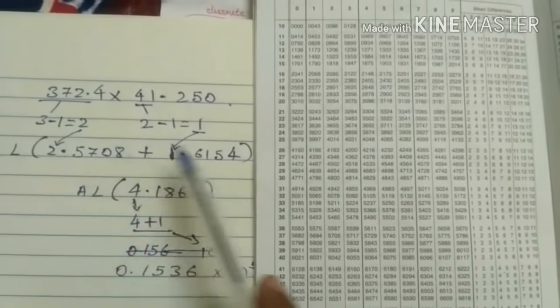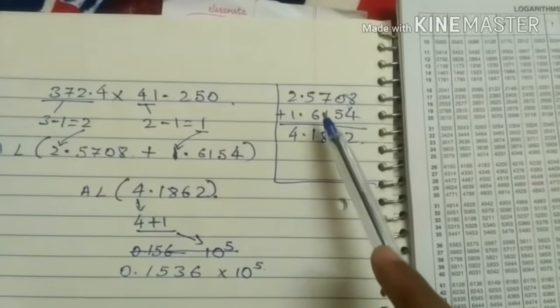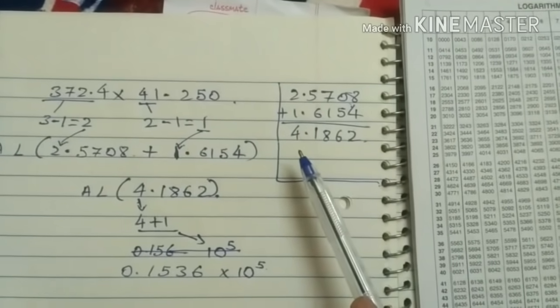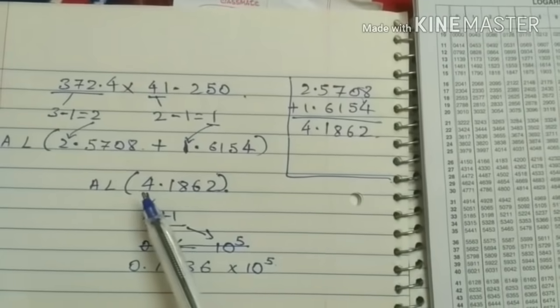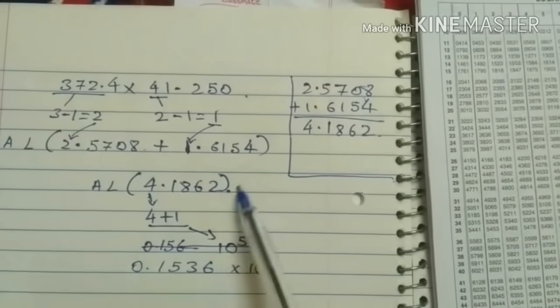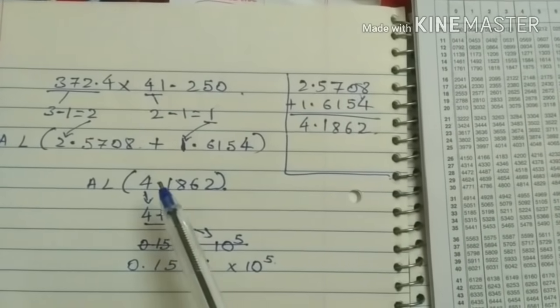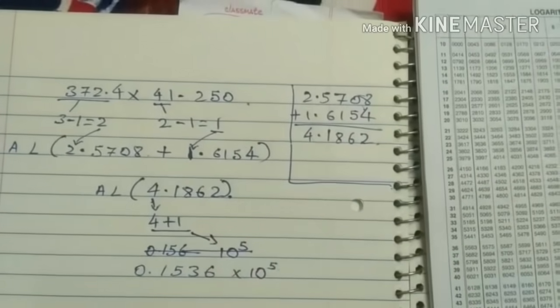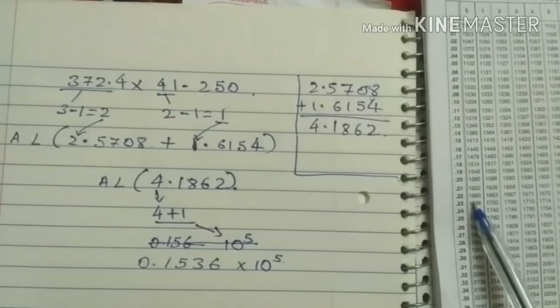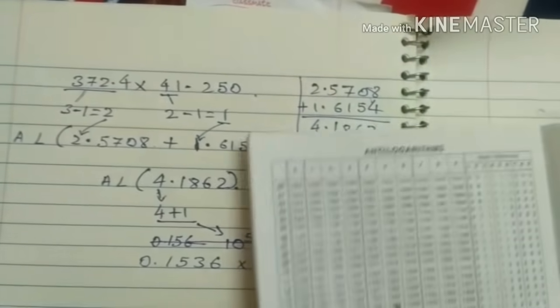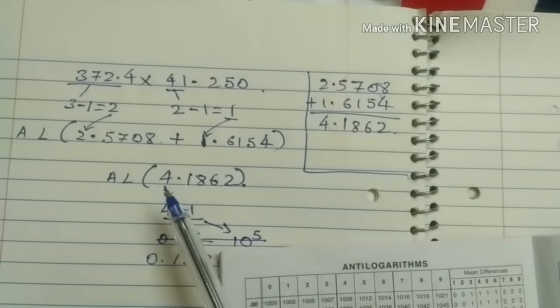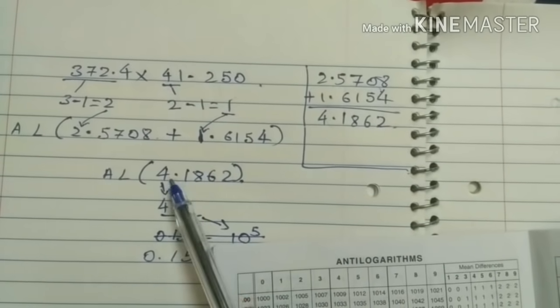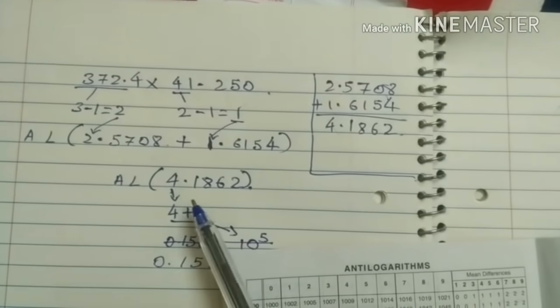Then we have to just add this 2 number. Here what I have shown in addition. Addition is simple. Simple addition. 4.1862. So now we have to find antilog of this. What? 4.1862. So whenever you find antilog. It is. We have to find here. After the decimal point. We have to find antilog of. After the given number. After the decimal. Decimal point.